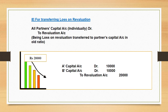For transferring loss on revaluation account: loss arises when the debit side exceeds the credit side and the balancing figure is written on credit side. Loss will decrease capital, so capital account is debited. Entry is: Partners' Capital Account debit individually in their old ratio, to Revaluation Account. For example, there is a loss of rupees 20,000 and two partners A and B with no ratio given — equally: A's Capital Account debit by rupees 10,000, B's Capital Account debit by rupees 10,000, to Revaluation Account by rupees 20,000.